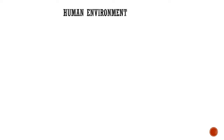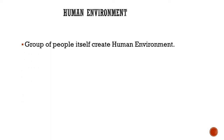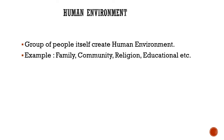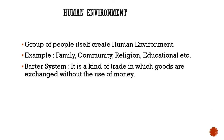The group of people surrounding any organism creates its human environment. For example, family, community, religion, education, etc. Then comes the barter system — a system created by people. It is a kind of trade in which goods are exchanged without the use of money, which was used in past times.